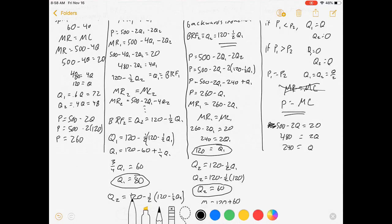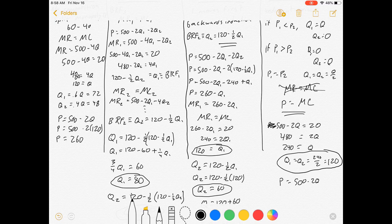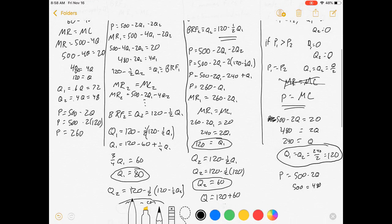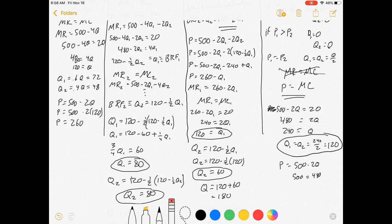Now Q1 and Q2 are both going to be half of that, so they're both making 120. The market price is 500 minus 2Q, which is 500 minus 480, which equals 20, the marginal cost. And there we got it.